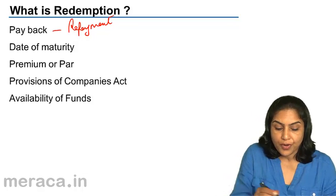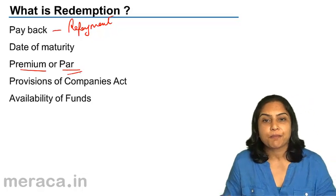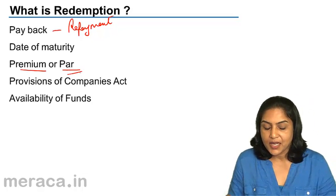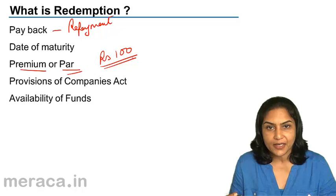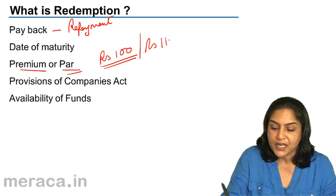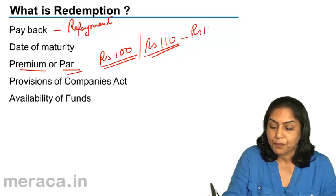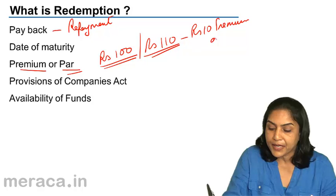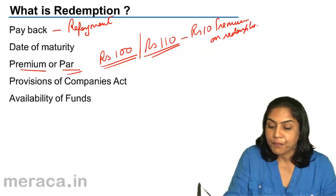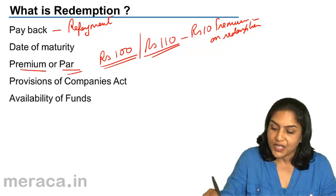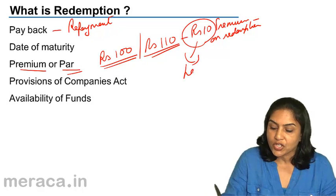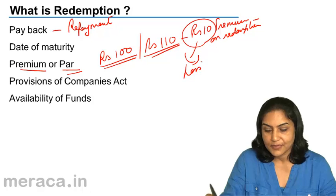The redemption may also be at premium or at par. Suppose a preference share face value — nominal value — is rupees 100. When they are redeemed at a premium, it means that we would pay rupees 110, where rupees 10 would be the premium on redemption. So the company ends up paying 10 rupees more on every share at the time of redemption. This extra 10 is actually a capital loss to the company.